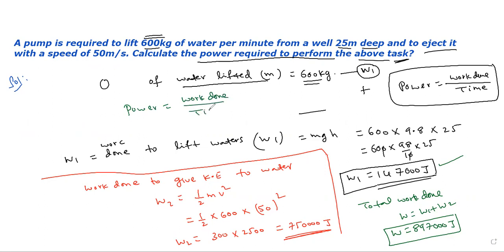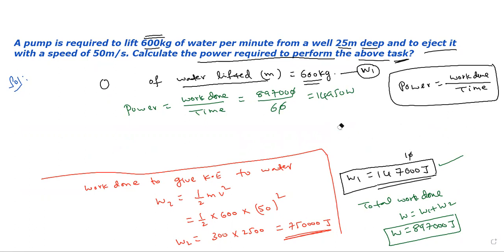Time is 60 seconds. Calculate: 222,000 divided by 60 equals... the result is approximately 3,700 watts. Power P equals 3.7 kilowatts.